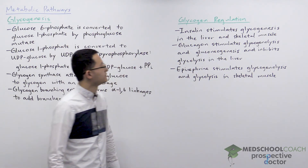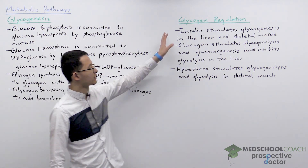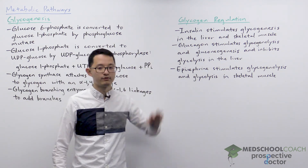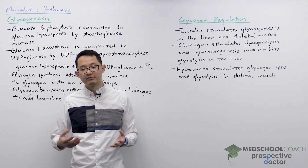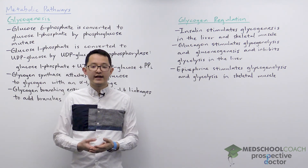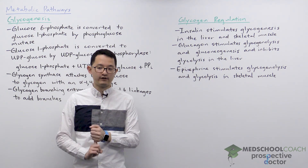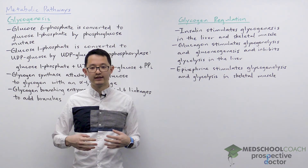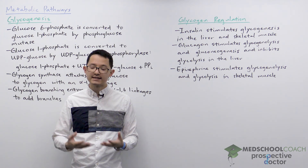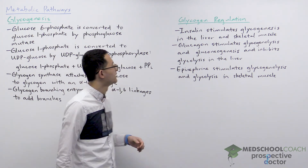So that's glycogenesis. Let's now talk about glycogen regulation. As we discussed before, glycogen is primarily stored in the liver and skeletal muscle, and the regulation of glycogen is slightly different between the two.